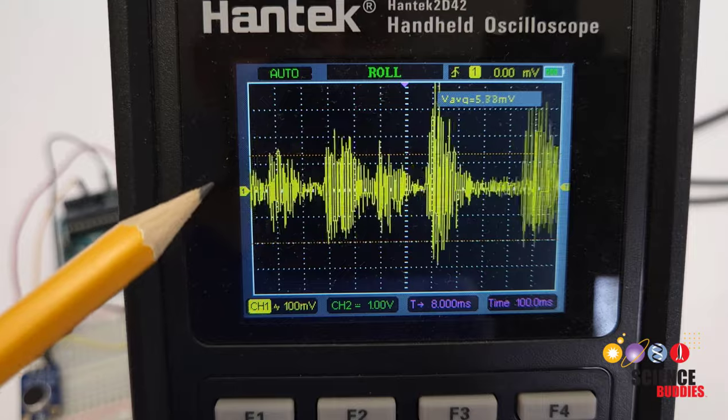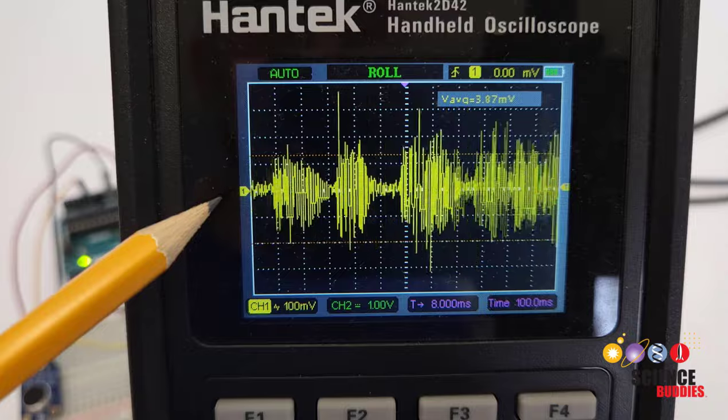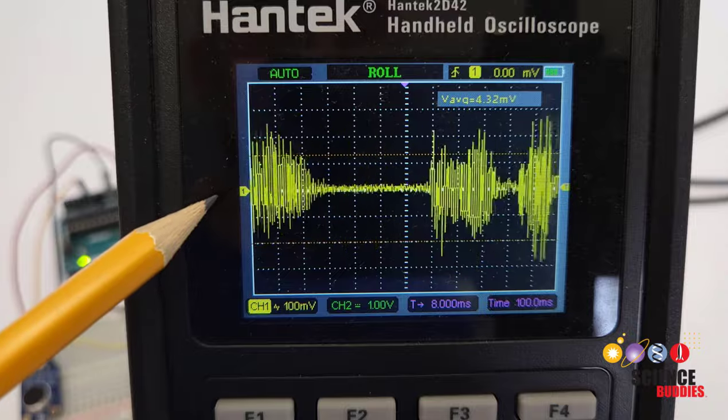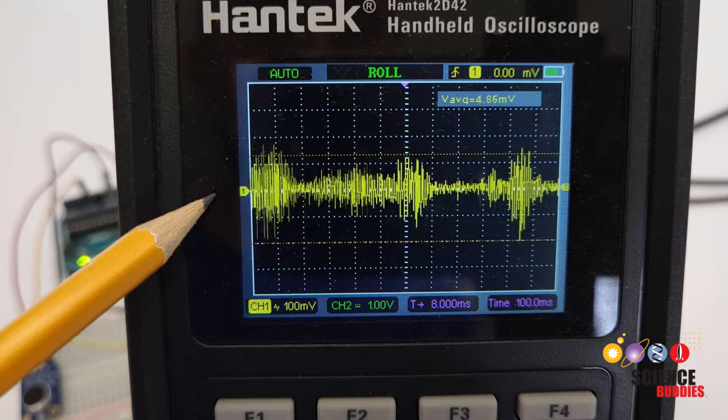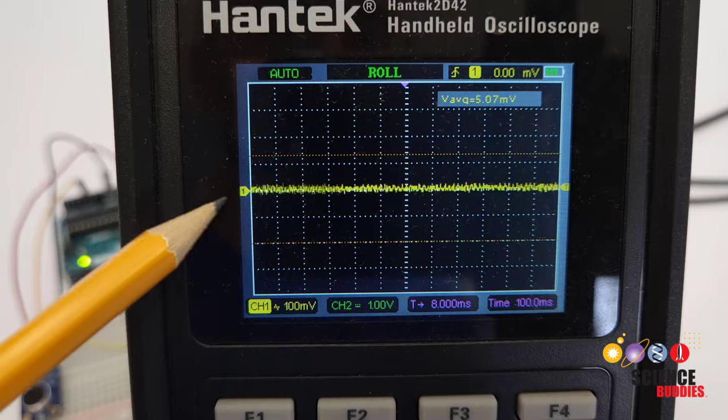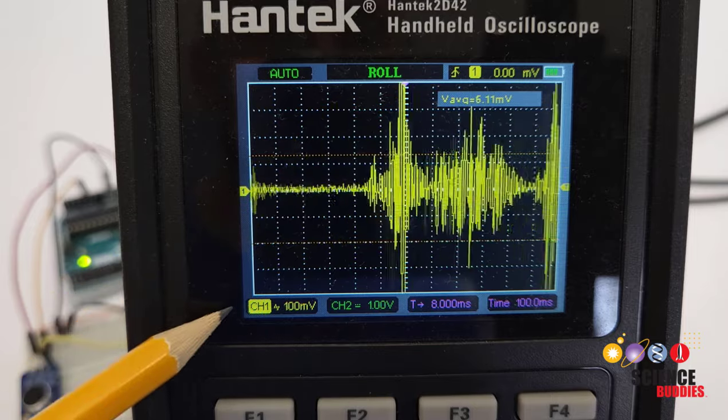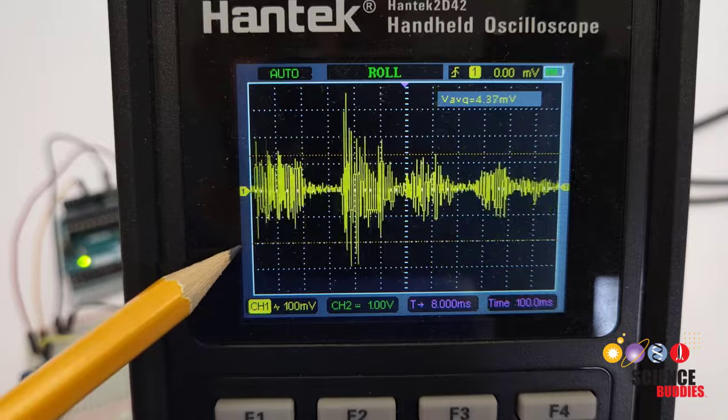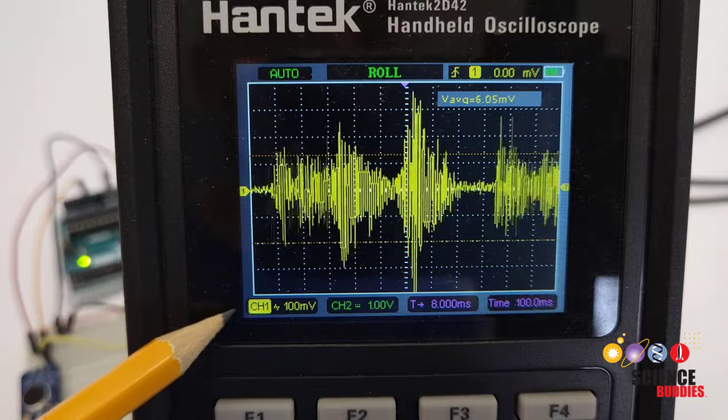But you can also see that if I stop talking, that line is not perfectly flat. There is some baseline level of electrical noise on the oscilloscope, and you might also have some ambient or background noise in the room. So let's see what a few seconds of silence look like when I stop talking. So you can see that the line was still fluctuating a little bit, but also notice that I am zoomed in pretty far here.